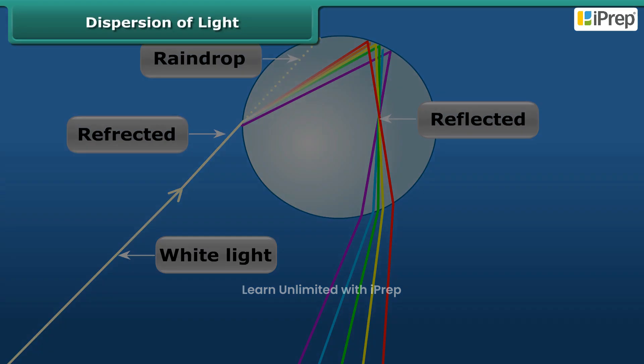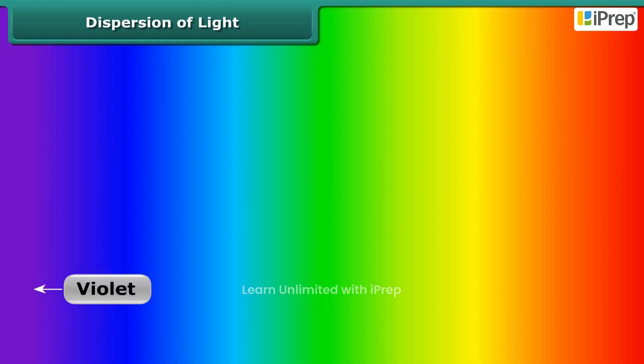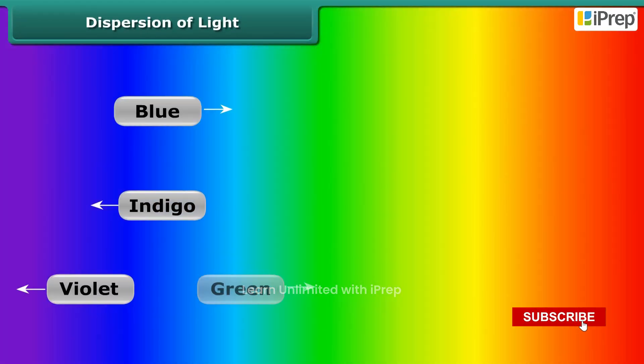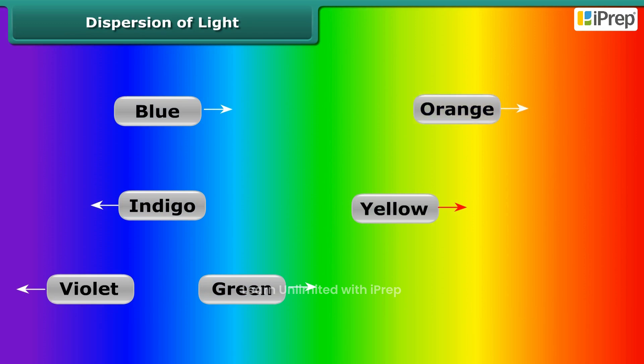The colors can be seen in the following order: violet, indigo, blue, green, yellow, orange, and red, or VIBGYOR.